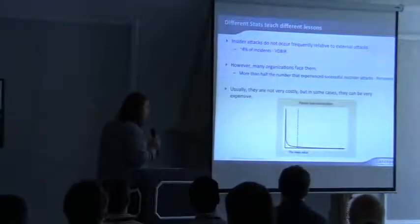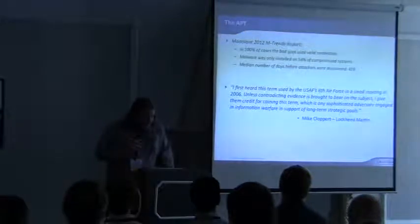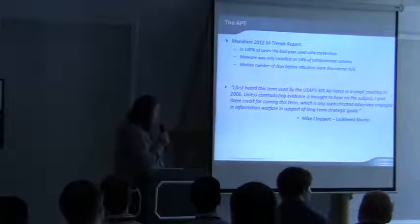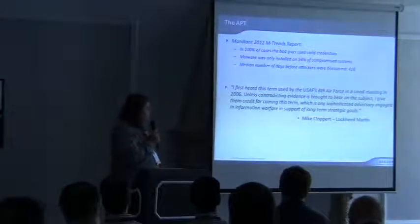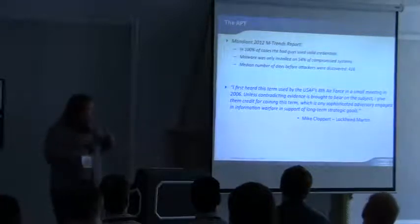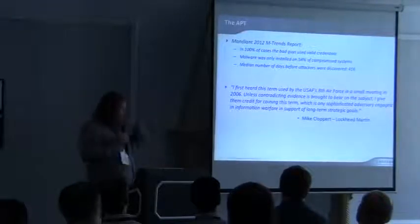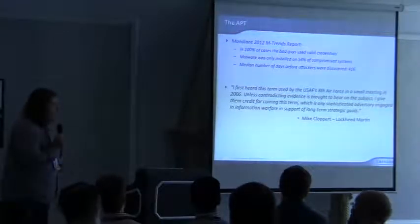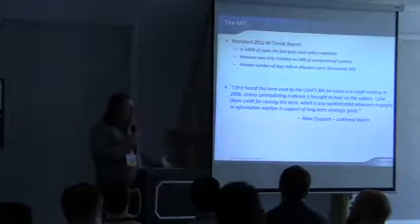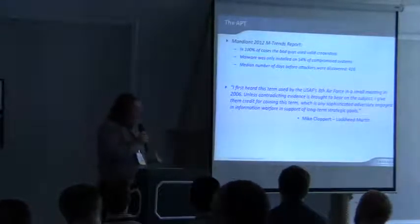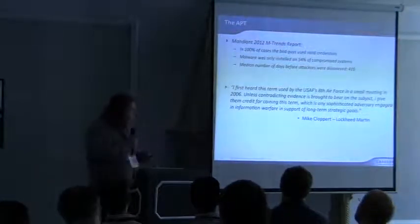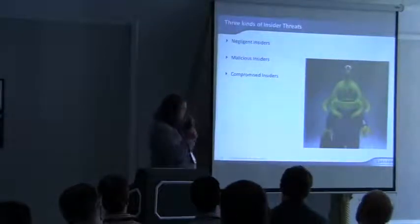One other variable: the Mandiant M-Trends report on advanced persistent threat cases shows that in 100% of those cases the bad guys used valid credentials, and malware was only installed on 54% of compromised systems. The first thing an attacker does when getting on the network is go after access credentials — attack the Active Directory server, get credentials, then come back in over VPN and log in as a legitimate user. This makes them very difficult to track, since most security solutions look for malware and exploits, not a legitimate-looking user.